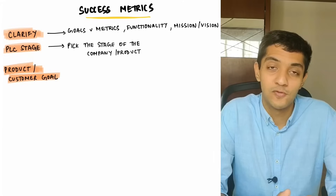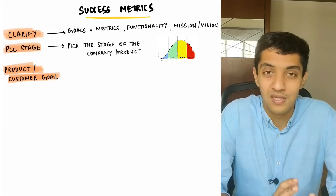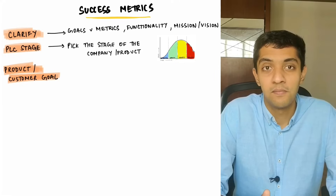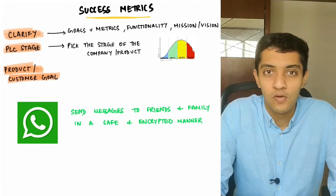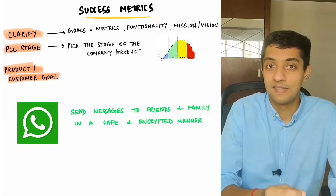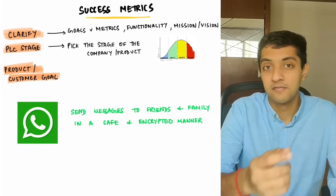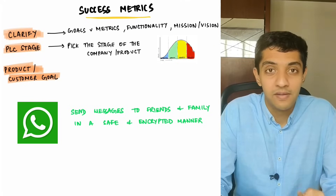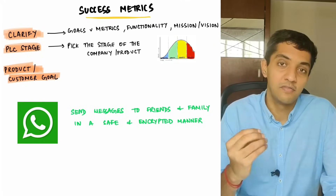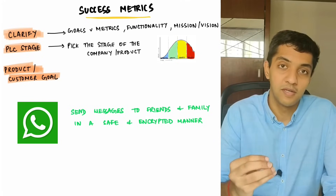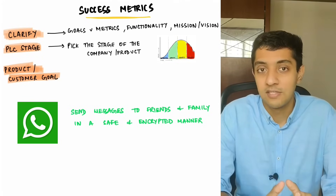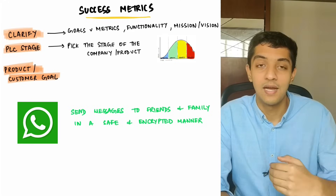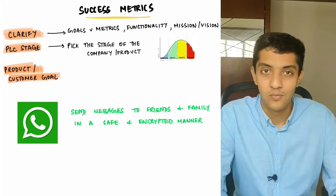The next step is to think about what the product goal or the customer goal is. For example, in WhatsApp the customer goal is to be able to send messages to friends and family in a safe and encrypted manner. This is important when defining your North Star metric, because a North Star has to marry the customer objective with what the company tries to achieve.